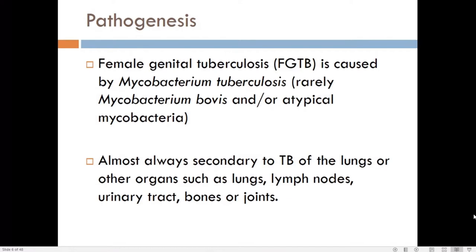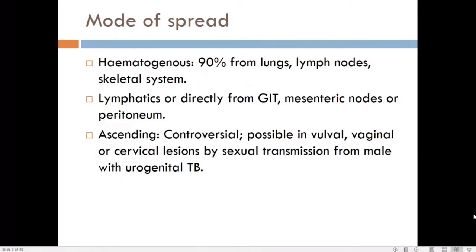Genital tuberculosis is almost always secondary to tuberculosis of other organs, such as the lungs, lymph nodes, urinary tract, bones, or joints. Spread to the genital organs can occur by hematogenous route, by lymphatics, or by direct spread from adjacent bowel or peritoneum. Sexual transmission from a male partner with urogenital tuberculosis has also been suggested as a possible ascending route.